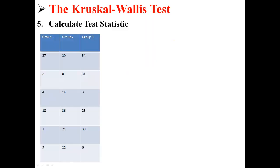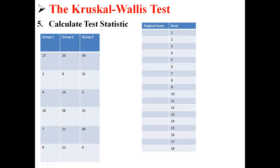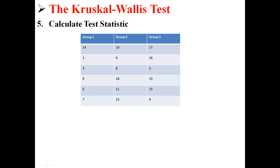Now let's actually calculate our test statistic. Here we have our information — I just moved it over to the left so we can work with it. What we want to do for a Kruskal-Wallis test is organize our scores by rank, from smallest to largest. Here we have three groups with six scores in each group, so we have 18 scores. We're going to rank those 18 scores to calculate the chi-square statistic. For example, our smallest score is 2, so that's rank 1, while our largest score is 36, so that's rank 18. We're no longer working with the original data — we're working with our ranks, because our original data is ordinal.